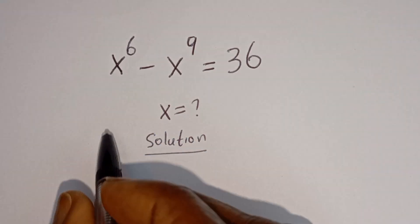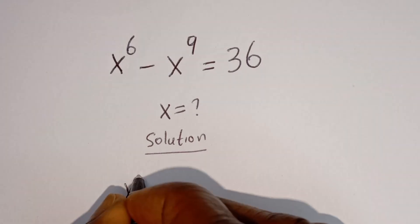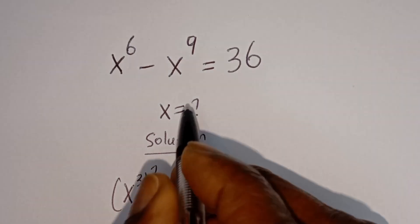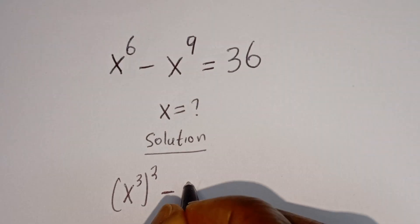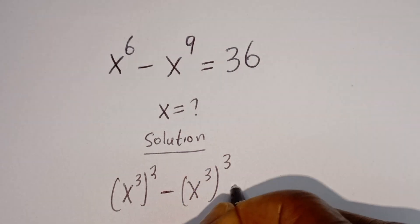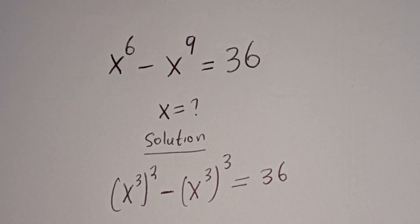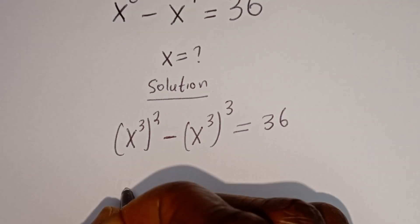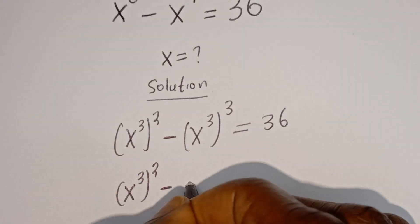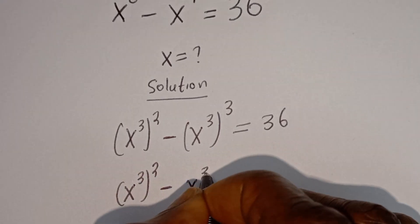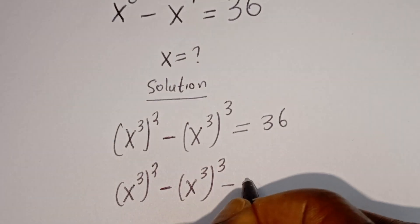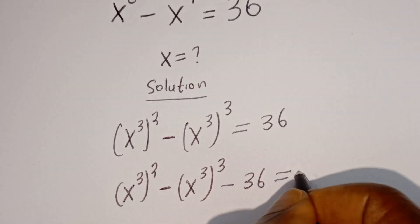Here, s to the power of 6 can be written as s to the power of 3, all squared, minus s to the power of 9, which can be written as s to the power of 3, all to the power of 3, is equal to 36.